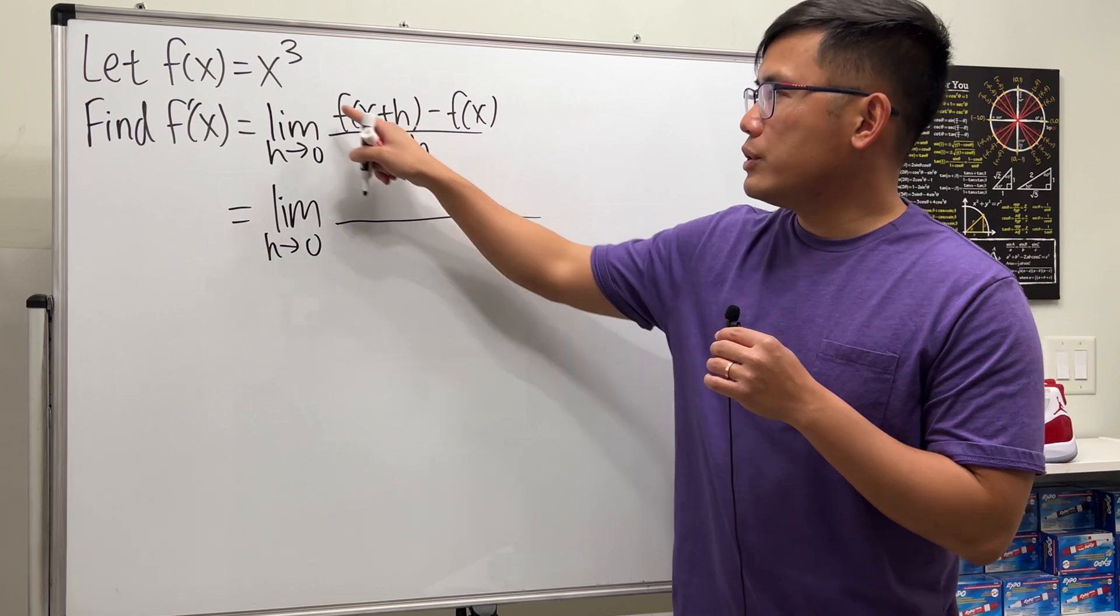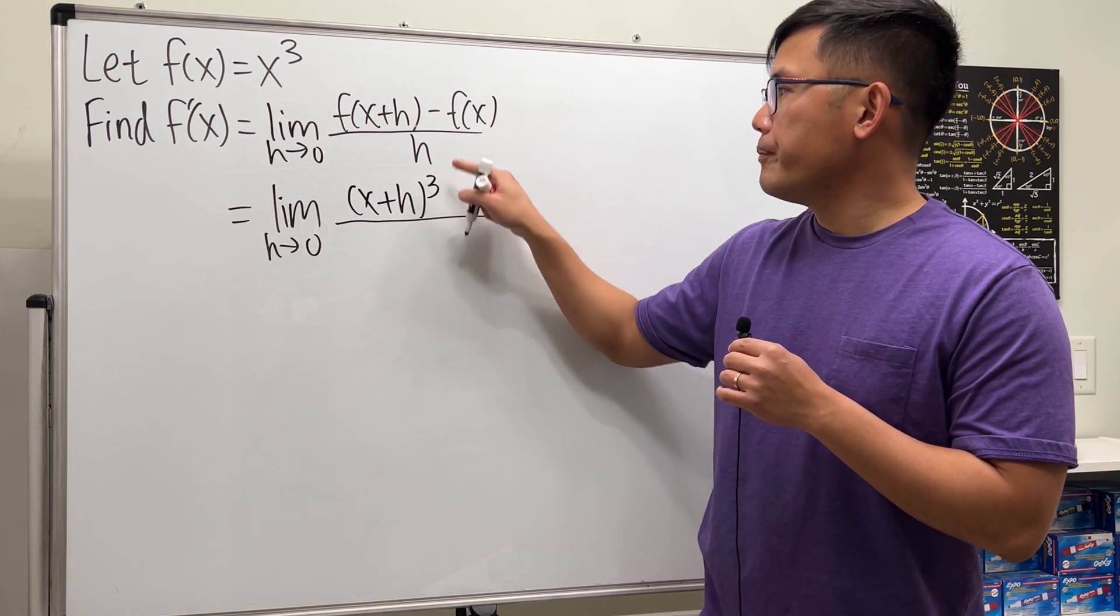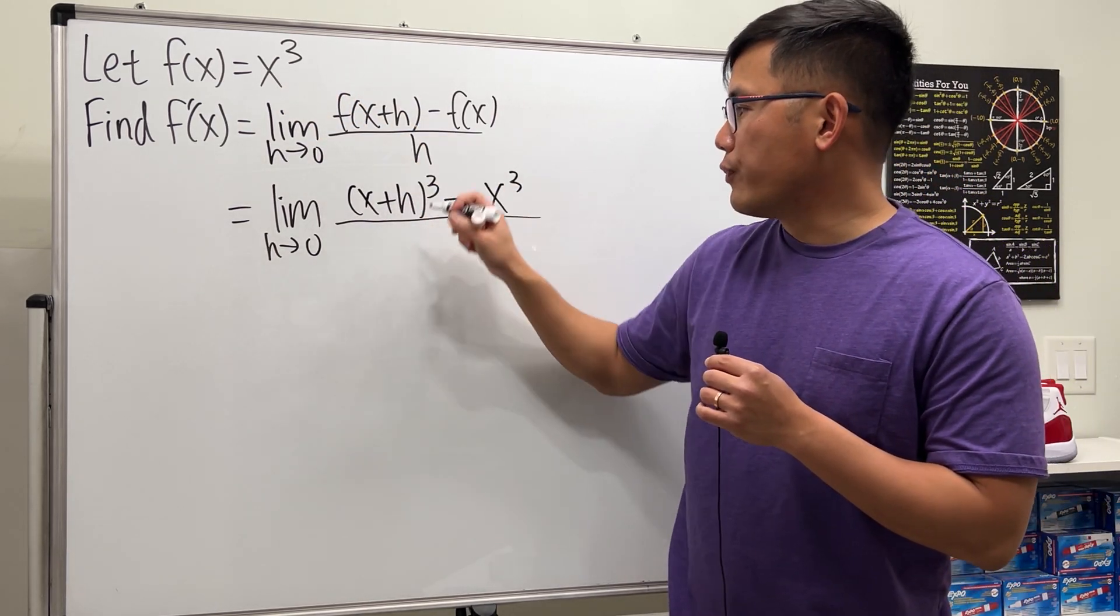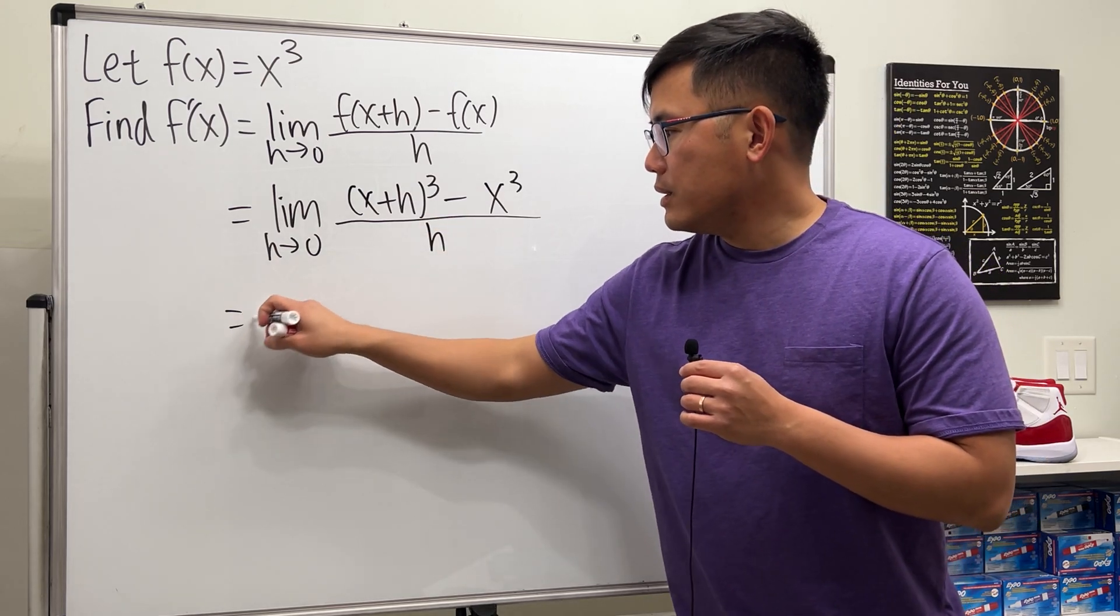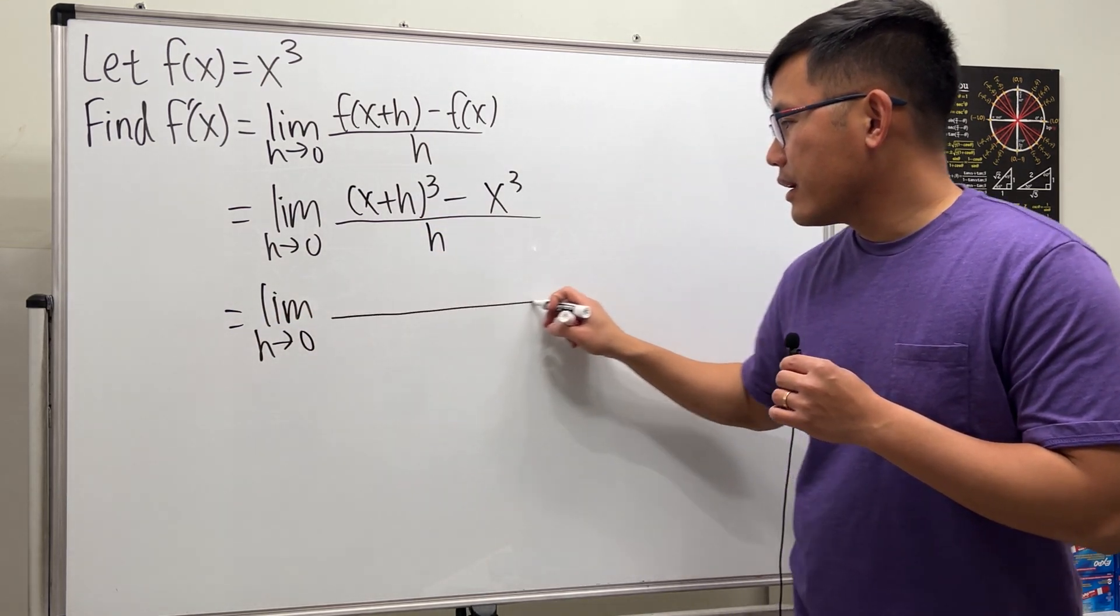So this right here is the limit as h approaching zero. For f of x plus h, we put x plus h into here so we get x plus h to the third power, and then minus f of x which is just that x to the third power, all over h. And now we just have to expand this.